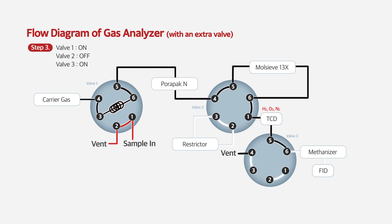Valve three is turned on after a certain flow of oxygen is vented, and carbon monoxide is converted to methane in the methanizer and detected by FID.